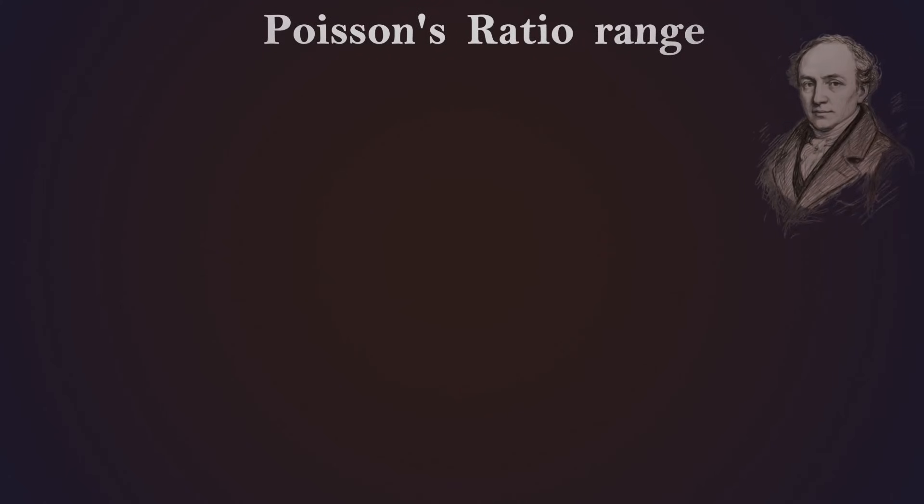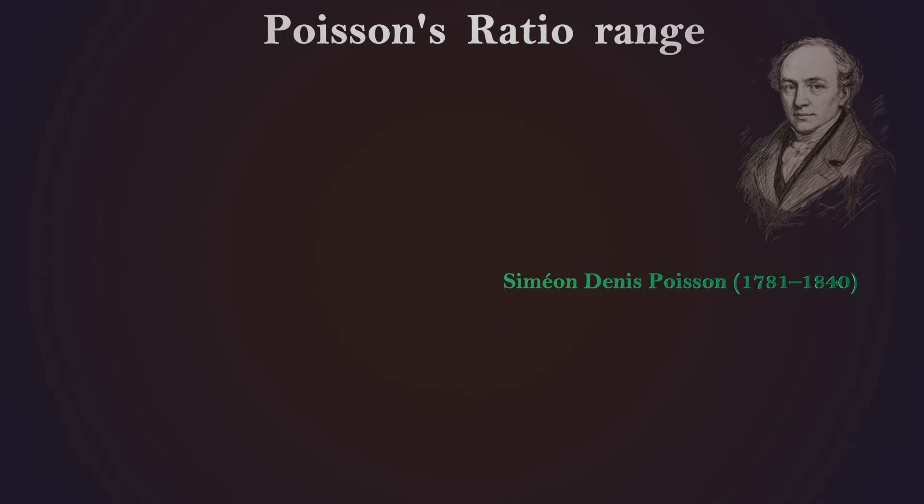The concept of Poisson's ratio was introduced by the French mathematician and physicist Simeon Denis Poisson in 1828.